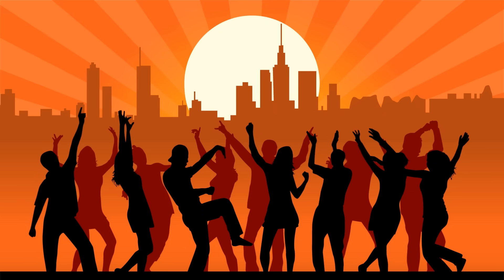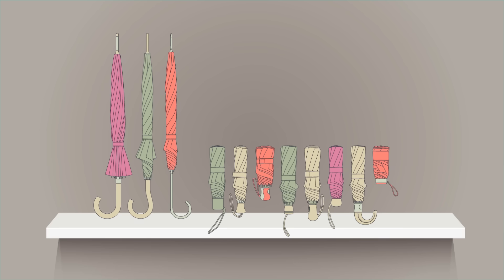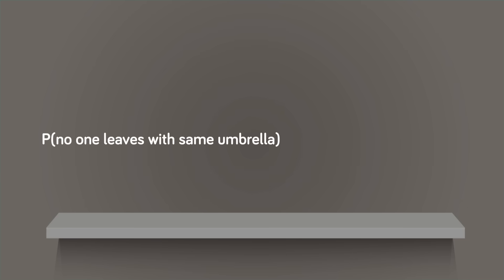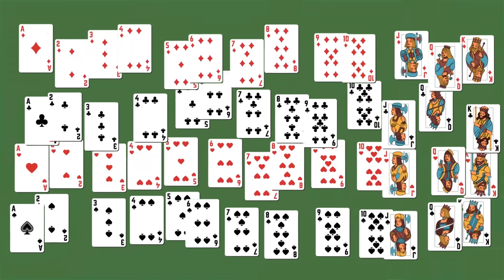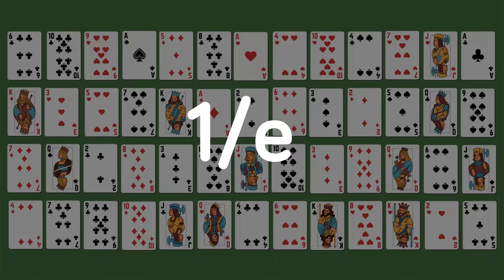Next, imagine a party where everyone brings an umbrella. After the party, people are in a rush and everyone grabs a random umbrella from the stack, not caring if it's theirs or not. The probability that no one left with their own umbrella is again about 1 over E, if the number of guests is pretty large. Another way to look at this: take a fresh deck of cards in proper order and shuffle it randomly — there's about a 1 over E chance that no card is in its original spot.